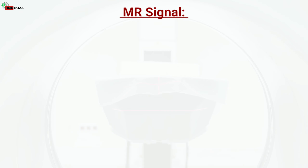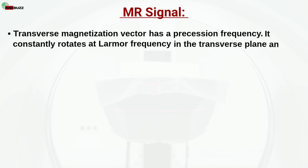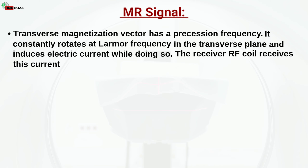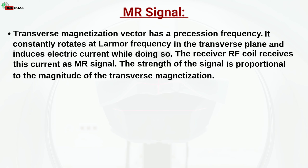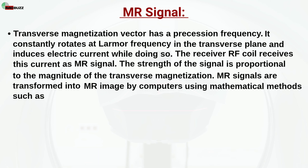MR signal: The transverse magnetization vector has a precession frequency. It constantly rotates at the Larmor frequency in the transverse plane and induces electric current while doing so. The receiver RF coil receives this current as the MR signal. The strength of the signal is proportional to the magnitude of the transverse magnetization. MR signals are transformed into an MR image by computers using mathematical methods such as Fourier transformation.